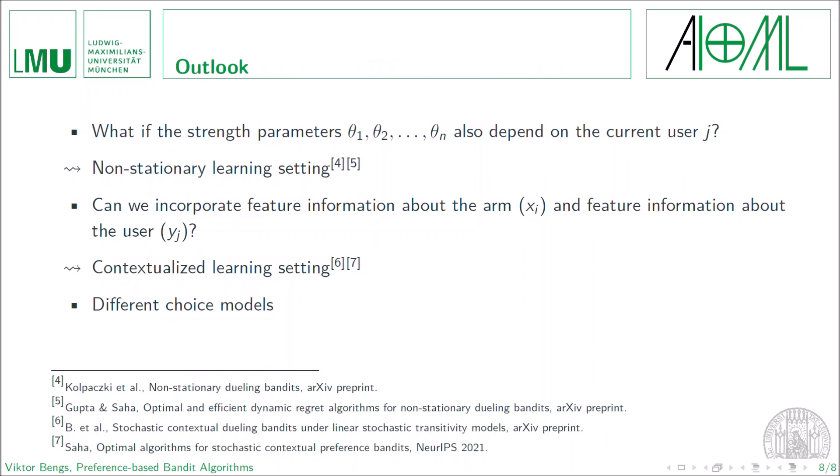Now finally, I want to mention a couple of other interesting research questions related to the setting presented here. One is where we incorporate user heterogeneity into the problem setup in the sense that the strength parameters are varying with the user as well, so it's basically a non-stationary learning setting. Another interesting setting is given if we incorporate feature information about the arms or the users or both, which is also known as a contextualized learning setting. Finally, what would be also interesting is to consider other choice models than the MNL model. Although it's theoretically appealing, but still for practical reasons a bit too restrictive. So it would be interesting to investigate how this MNL model assumption can be relaxed and if learning is still feasible in such cases.